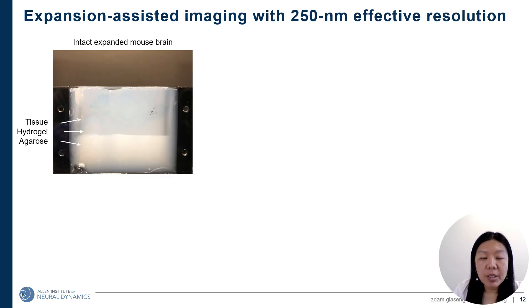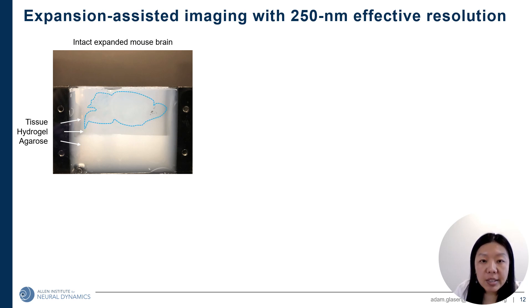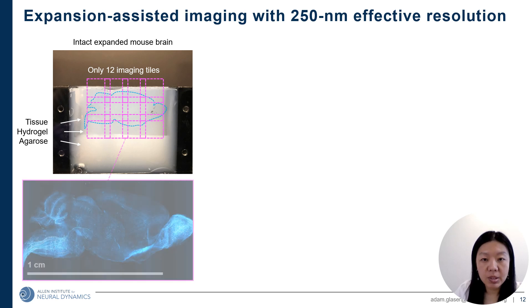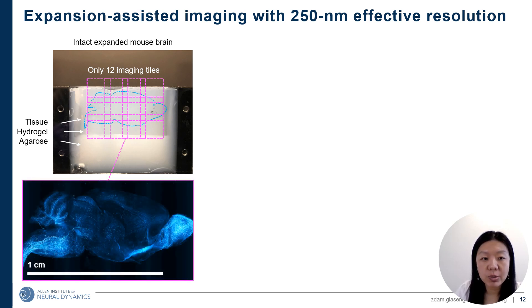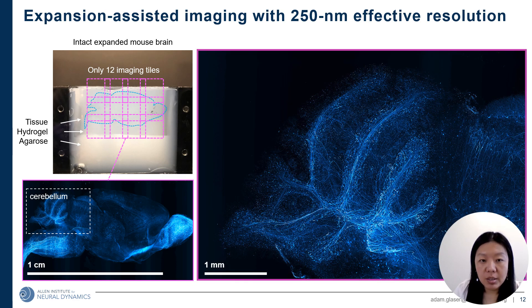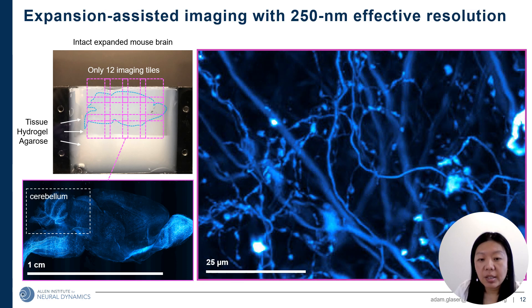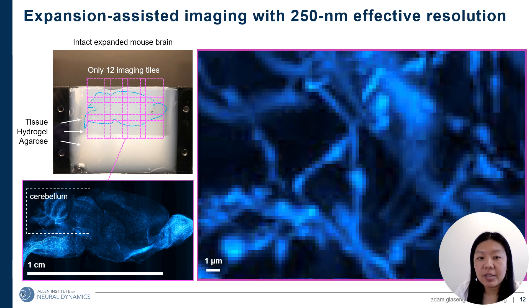Here are some example images taken by our ExaSPIM system. This picture shows an expanded brain mounted in a sample holder. The dashed line shows the shape of the brain. The brain was embedded in a hydrogel cube, and the image contains only 12 tiles to cover the entire brain. This is the whole brain image after stitching the 12 tiles. We now zoom into the cerebellum area, continuing to zoom in repeatedly until the smallest visible feature is about 1 micron.